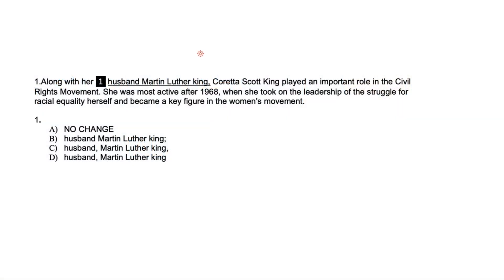Let's have a look at this example. Along with her husband Martin Luther King, Coretta Scott King played an important role in the civil rights movement. She was most active after 1968 when she took on the leadership of the struggles for racial equality and became a key figure in the women's movement. Now we have a name here, but before looking at the question you need to understand the context — the entire paragraph is basically talking about Coretta Scott. That's a huge hint, meaning anything other than Coretta Scott is extra, so the name Martin Luther King is extra in this paragraph.